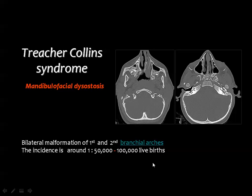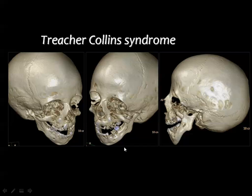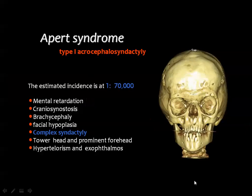Treacher Collins syndrome is a very rare anomaly that affects mainly the mandible and the zygomas as well as the zygomatic arches. A key diagnostic feature best appreciated on 3D CT is bowing of the lower border of the mandible. There may also be hypoplasia or absence of the zygomatic arch. Different 3D reconstructed skull projections show deficiency of the zygomatic arch bilaterally and hypoplasia of the mandible with concavity of its lower border.